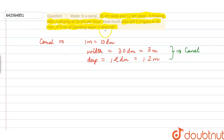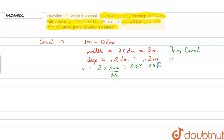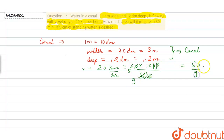The flowing velocity of water is 20 kilometers per hour. Let us convert this to meters per second. We multiply by 1000 to convert kilometers to meters and divide by 3600. This gives us 50/9 meters per second, which is the velocity at which the water is flowing.